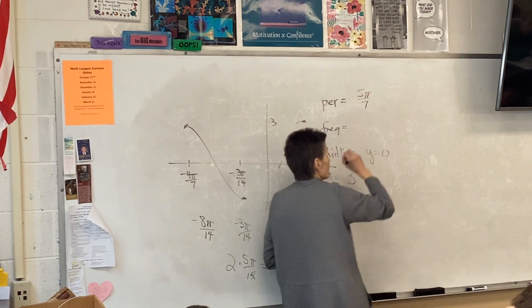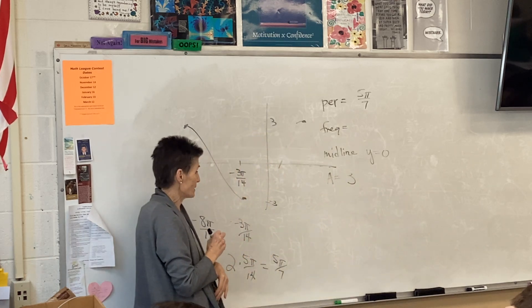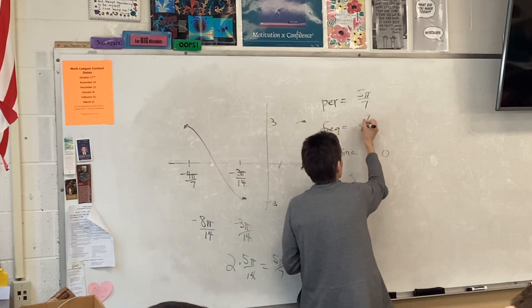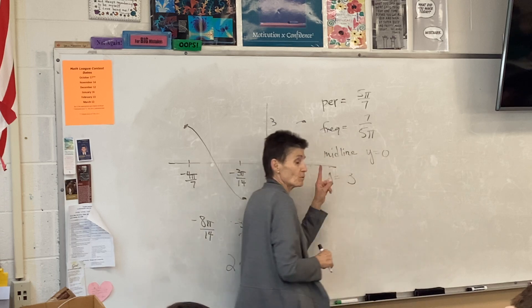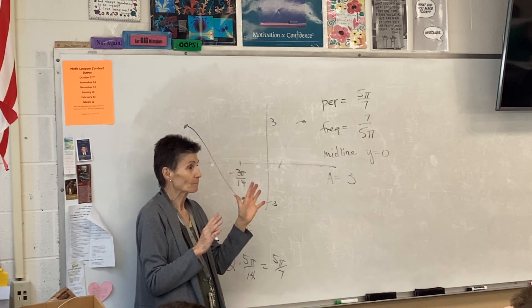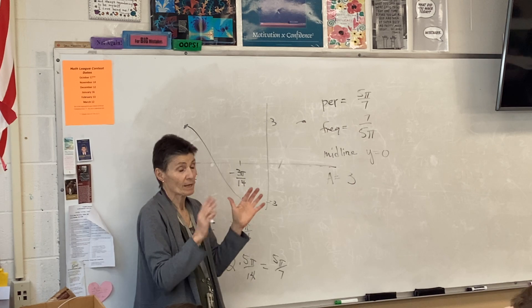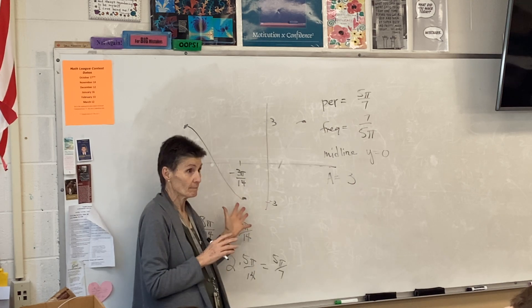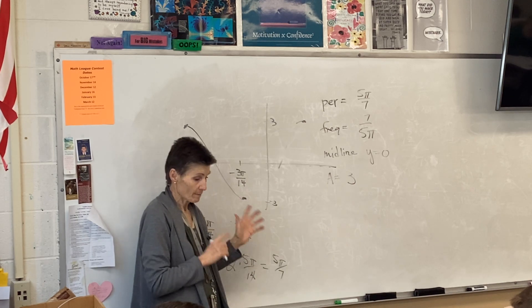So our period is 5π over 7, which makes our frequency 7 over 5π. Now some of you have turned that paper in already. Okay? You got it figured out now? Yeah.